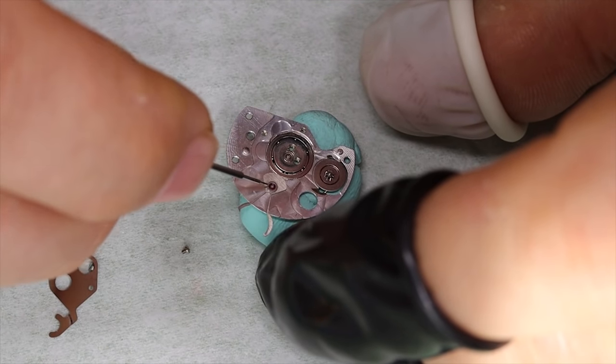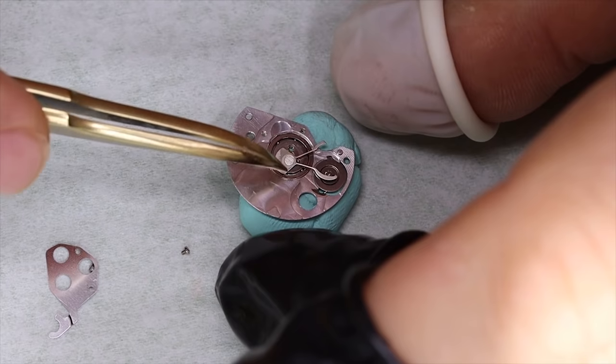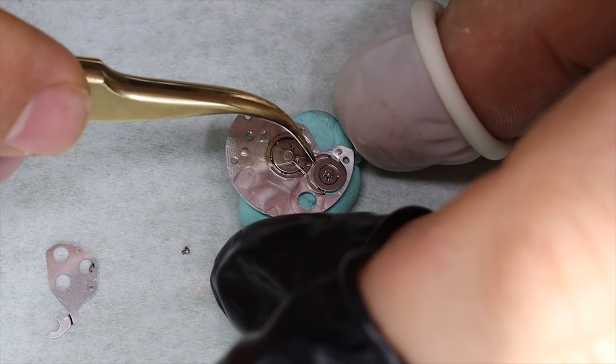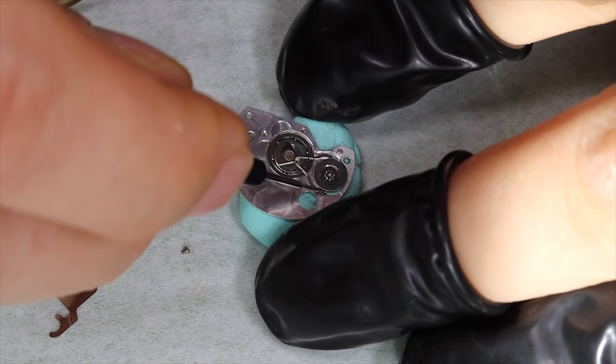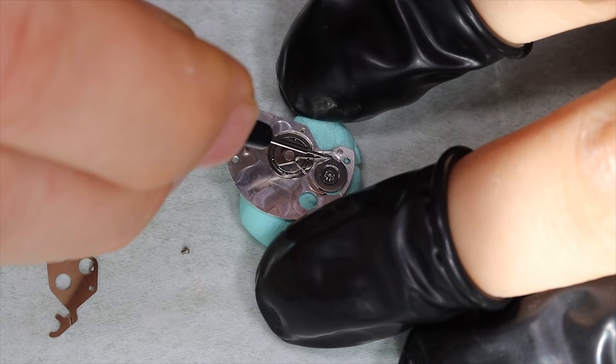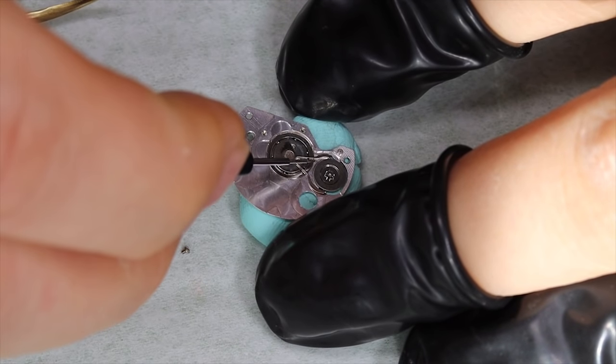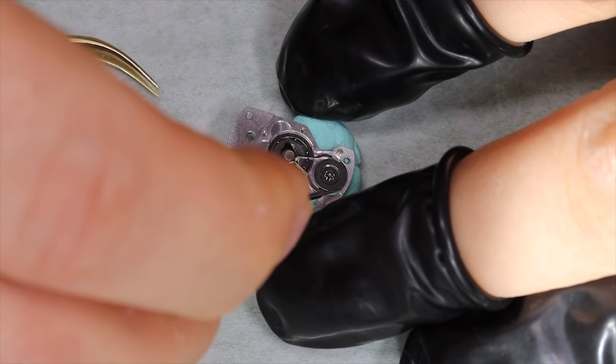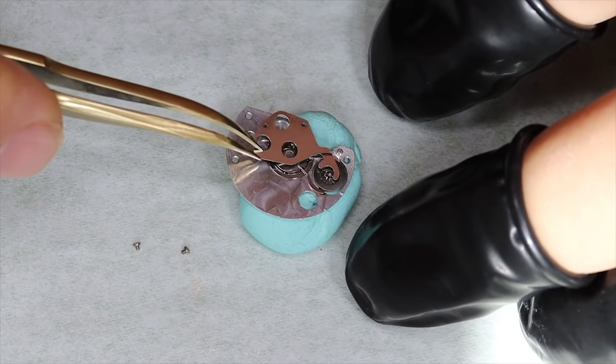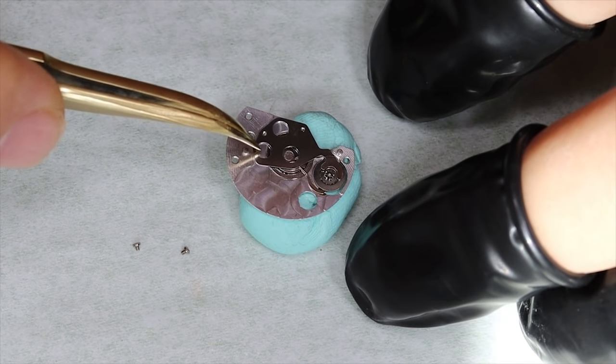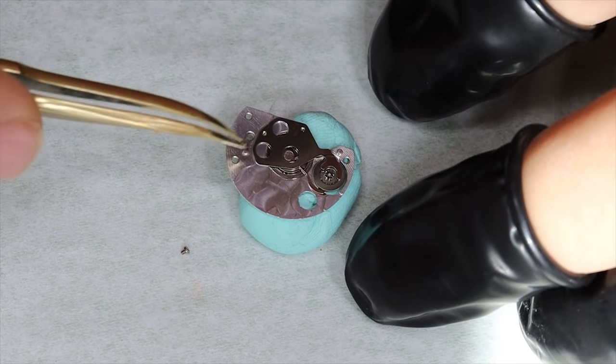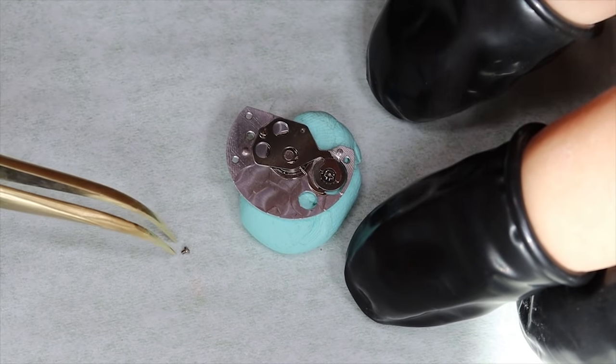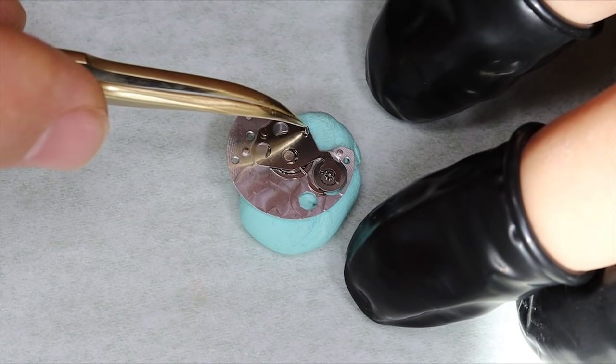We got into the automatic works and we have the magic lever here. This fits onto this asymmetric post, and then you have those two poles, one on each side of this intermediate wheel. So it does resemble the IWC Pellaton system a little bit, and it's much simpler. Not quite as effective, or efficient rather. But it's a pretty ingenious system. Important to actually oil the poles a little bit.